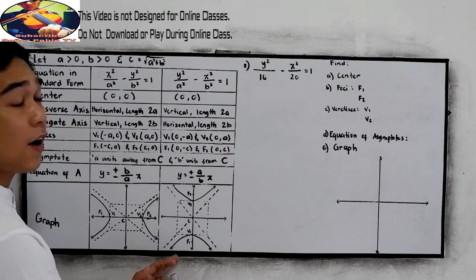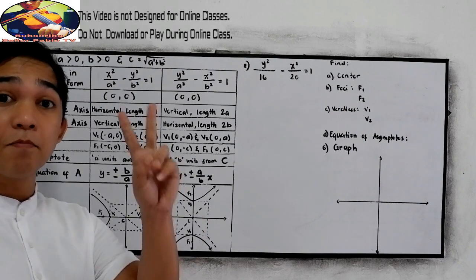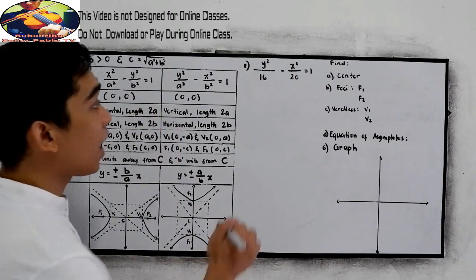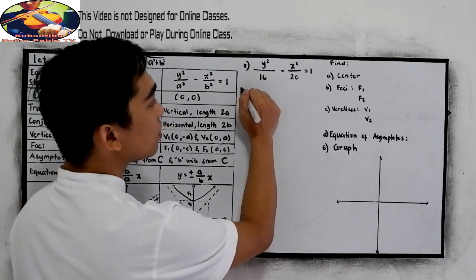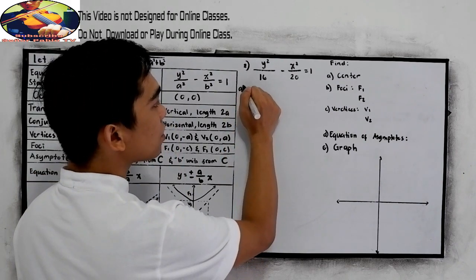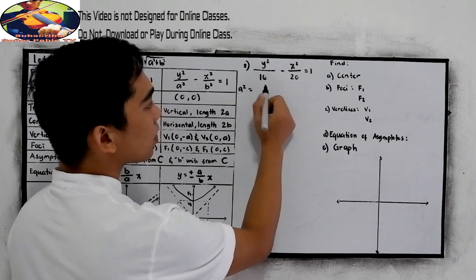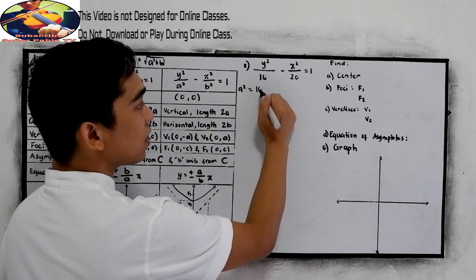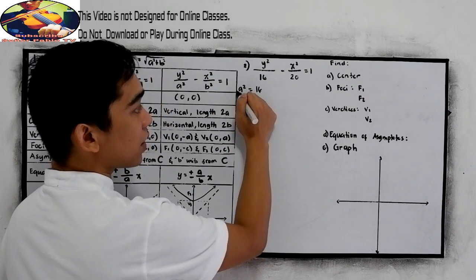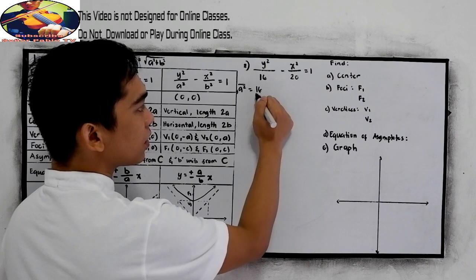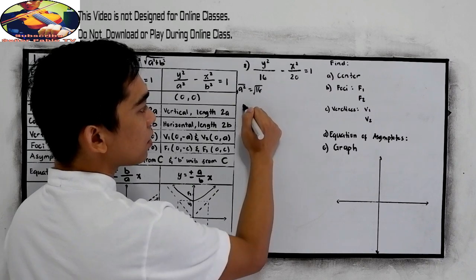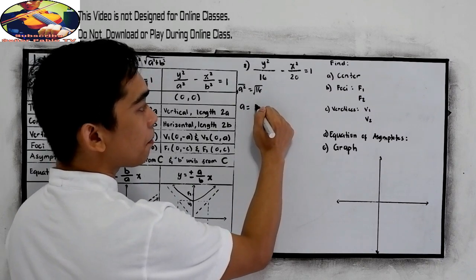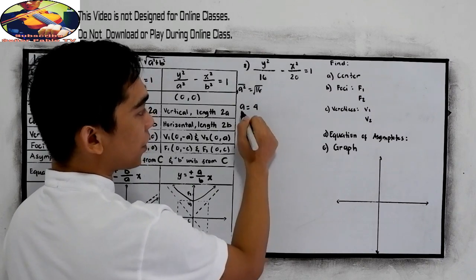Now let us find the a, b, and c. For our a, a squared is equal to 16 — that is our a squared. So we take the square root, and our a is positive 4.